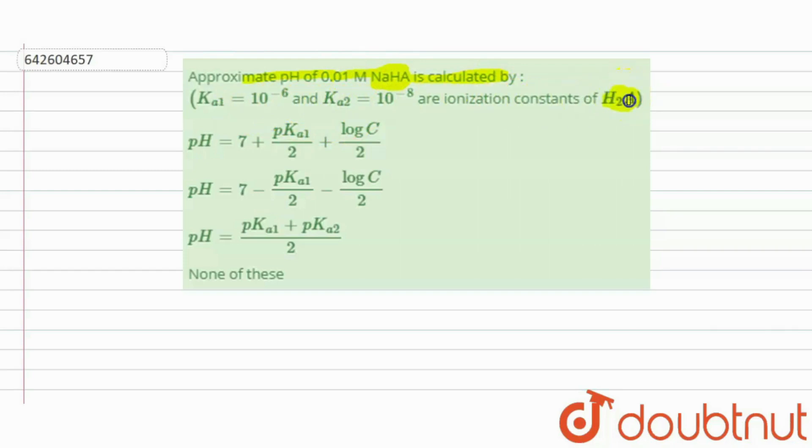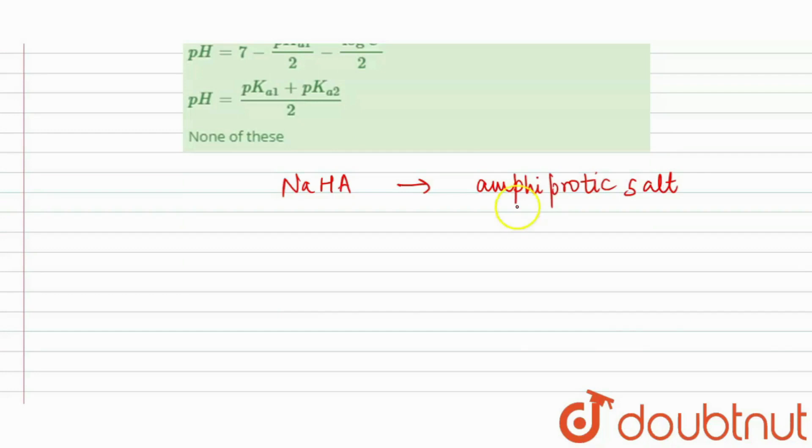If we see NaHA, this is our amphiprotic salt. So what do we mean by amphiprotic salt? Amphiprotic salts are those salts which act as acid and base.